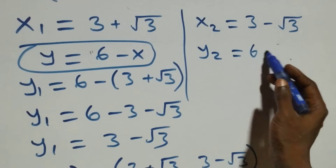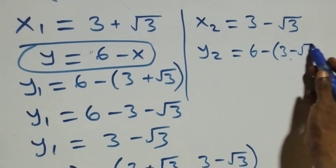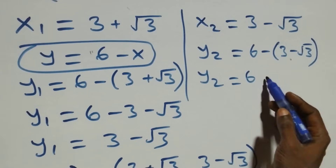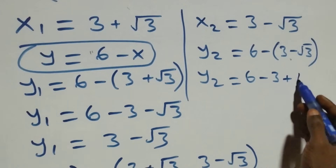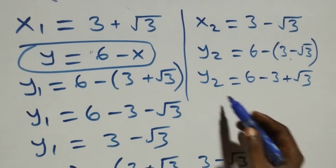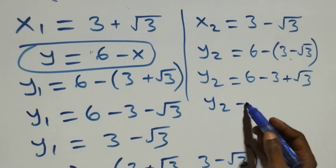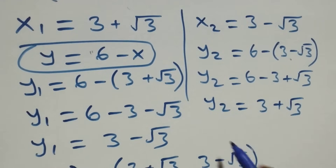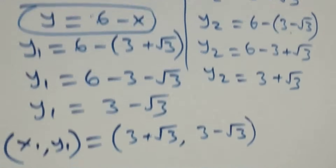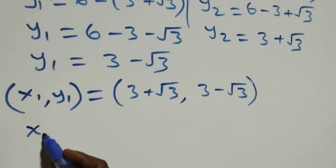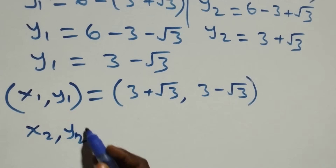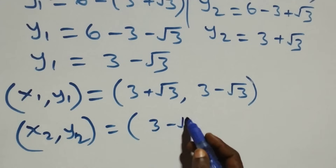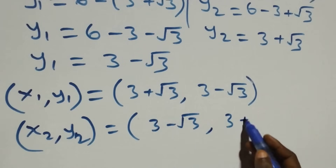For y2, we substitute x2: y2 equals 6 minus (3 minus root 3). Expanding gives y2 equals 6 minus 3 plus root 3, so y2 equals 3 plus root 3. The second solution pair is x2, y2 equals (3 minus root 3, 3 plus root 3).